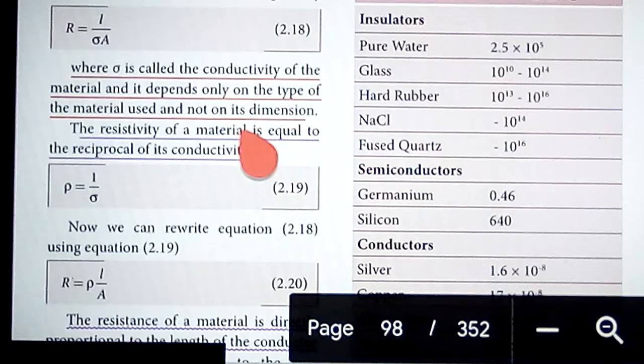The resistivity of the material is equal to the reciprocal of its conductivity, that is given by rho equals 1 by sigma as equation 2.19.